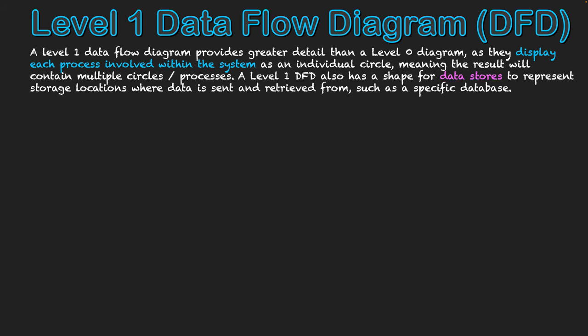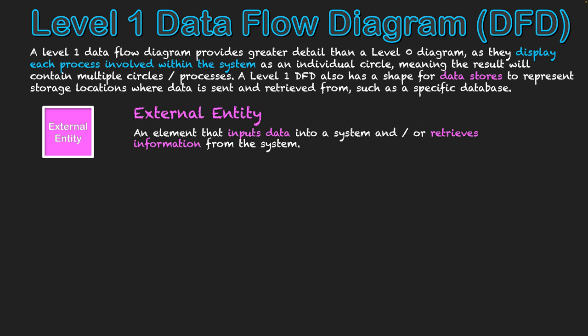Firstly, we have one that's exactly the same and that's the external entity — an element that provides input data into the system and/or retrieves information back from the system. It can represent people, other systems, data sources from other places, or products that are used to either obtain data or send information to.